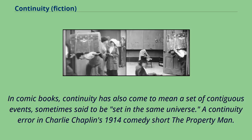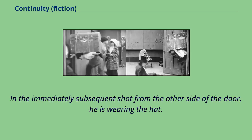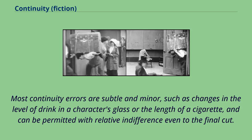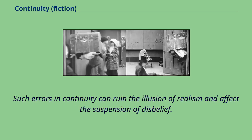In comic books, continuity has also come to mean a set of contiguous events, sometimes said to be set in the same universe. A continuity error in Charlie Chaplin's 1914 comedy short The Property Man: in the first frame, Chaplin's character is seen carrying a trunk through a door, holding his hat behind him. In the immediately subsequent shot from the other side of the door, he is wearing the hat. Most continuity errors are subtle and minor, such as changes in the level of drink in a character's glass or the length of a cigarette, and can be permitted with relative indifference even to the final cut. Others can be more noticeable, such as sudden drastic changes in the appearance of a character. Such errors in continuity can ruin the illusion of realism and affect the suspension of disbelief.